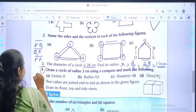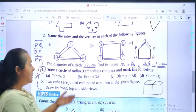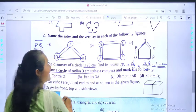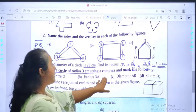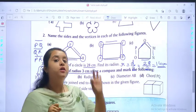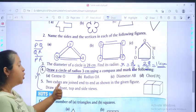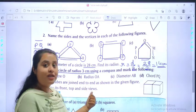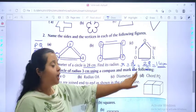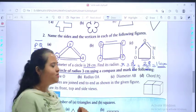So students, question number 4 and question number 5 is your homework. Let's discuss. Draw a circle of radius 3 centimeters using a compass and mark the following. You are supposed to draw a circle of 3 centimeters. Then, you will mark the center O, you will draw a radius OA, diameter AB, and chord PQ. It's very easy, students.